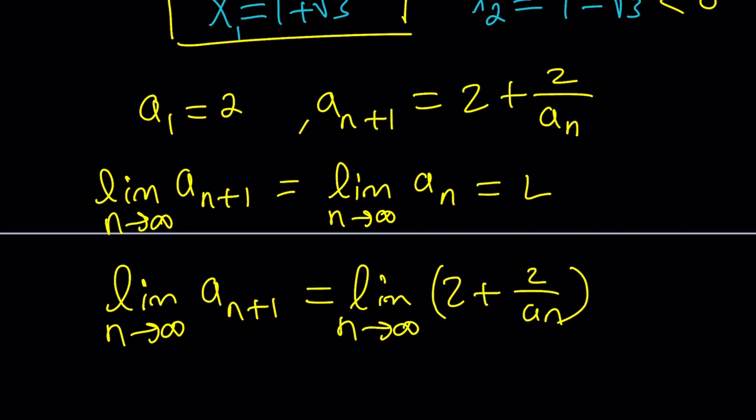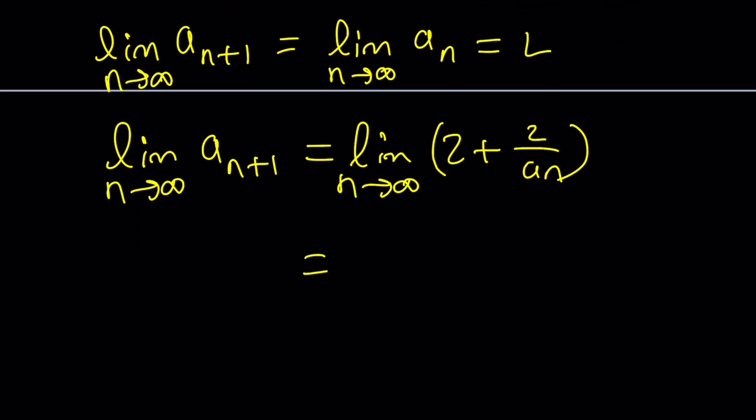And then this is going to be 2 plus 2 over limit as n approaches infinity of a sub n. And as you know, they are the same and they're both equal to L.